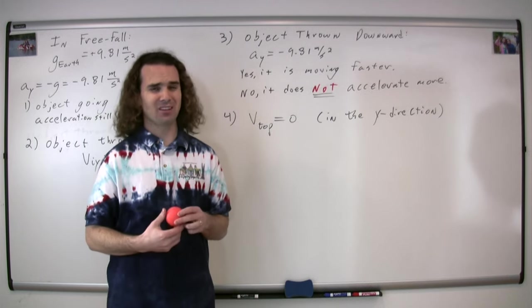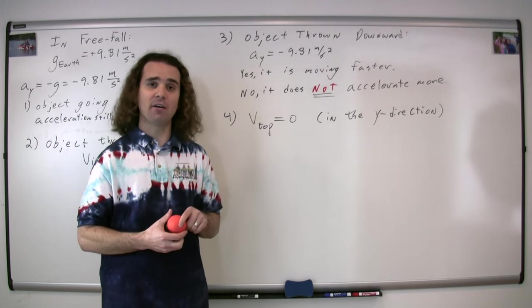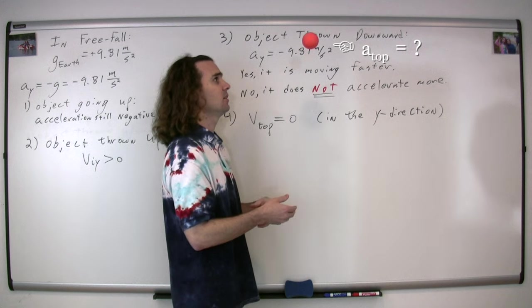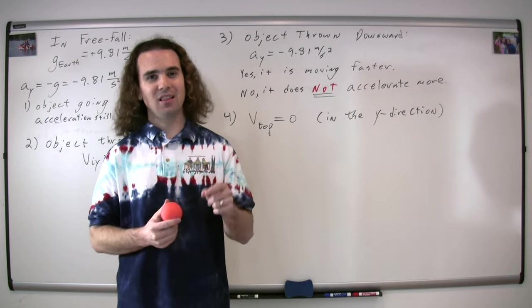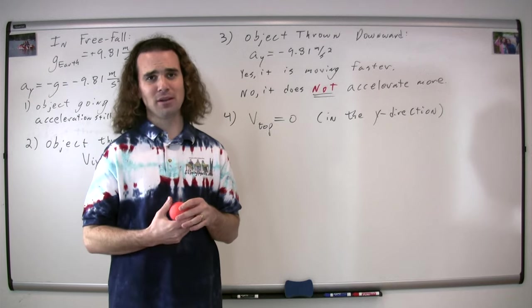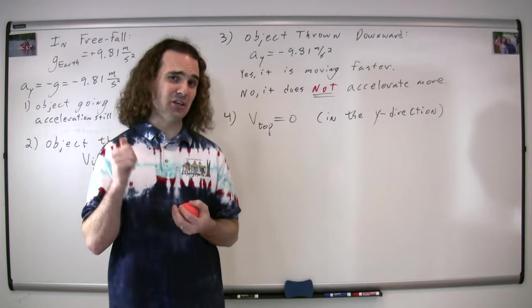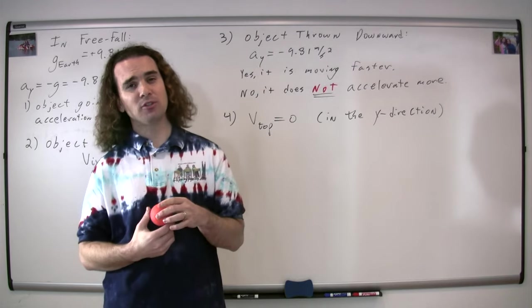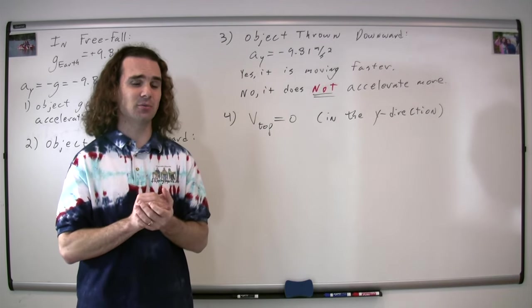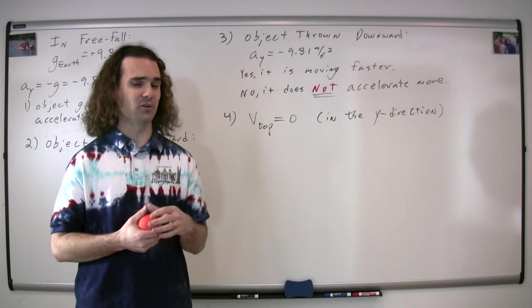Which leads us to our last misconception. Class, what is the acceleration in the y direction of the ball at the very top of its path, right there? Negative 9.81 meters per second squared. Right, which is why we need to talk about this. When the ball is at the very top of its path, is it touching anything? No. Is it in the vacuum that you can breathe? Yes. Then is it in free fall? Yes. Then its acceleration is? Negative 9.81 meters per second squared. But its velocity is zero, so its acceleration must also be zero. It is very common to assume that because the velocity at the top of the path is equal to zero, then the acceleration must also be equal to zero. This is not true.